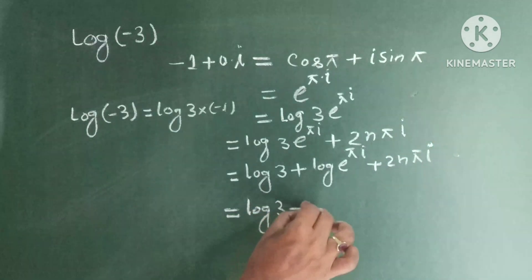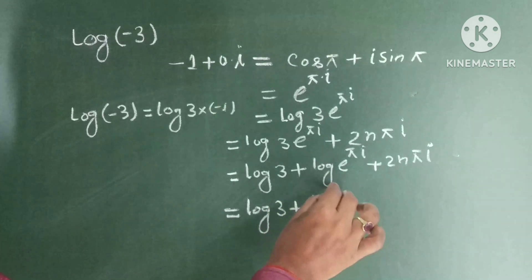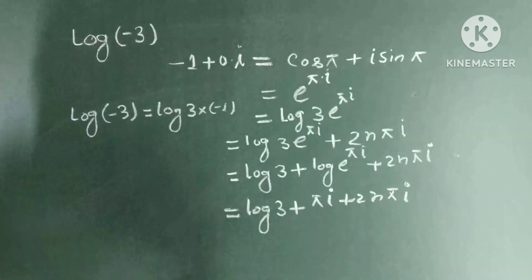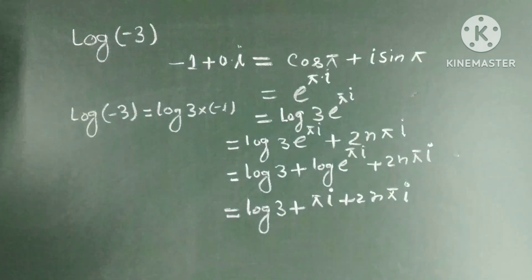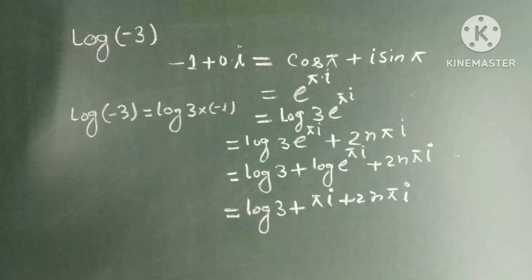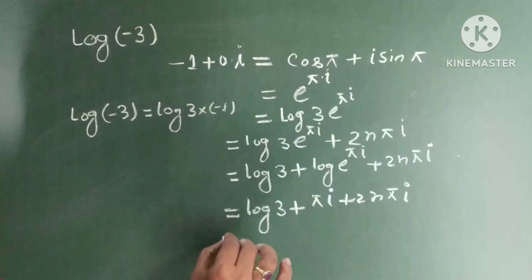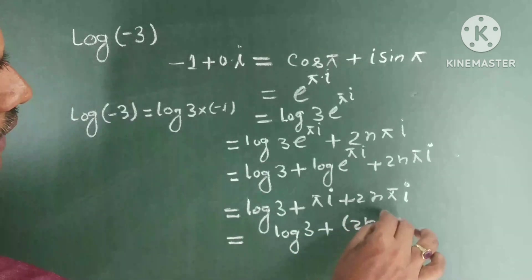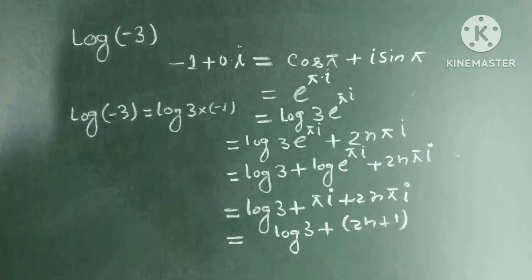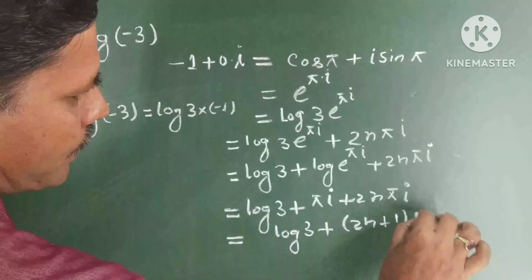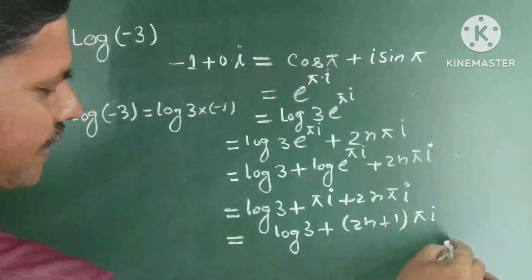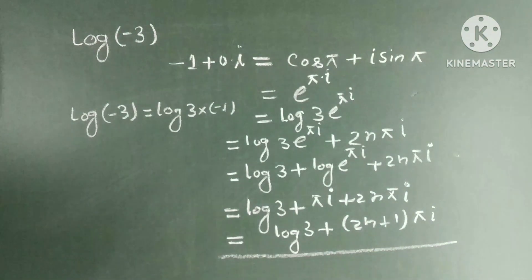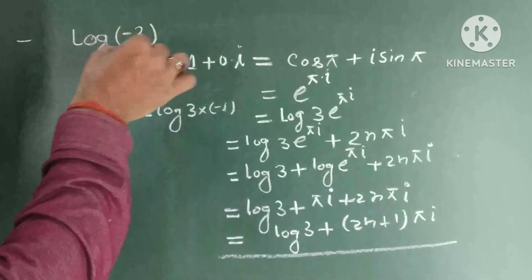This simplifies to log 3 plus pi eta plus 2n pi eta, which equals log 3 plus (2n plus 1) into pi into eta. This is the general value of log minus 3.